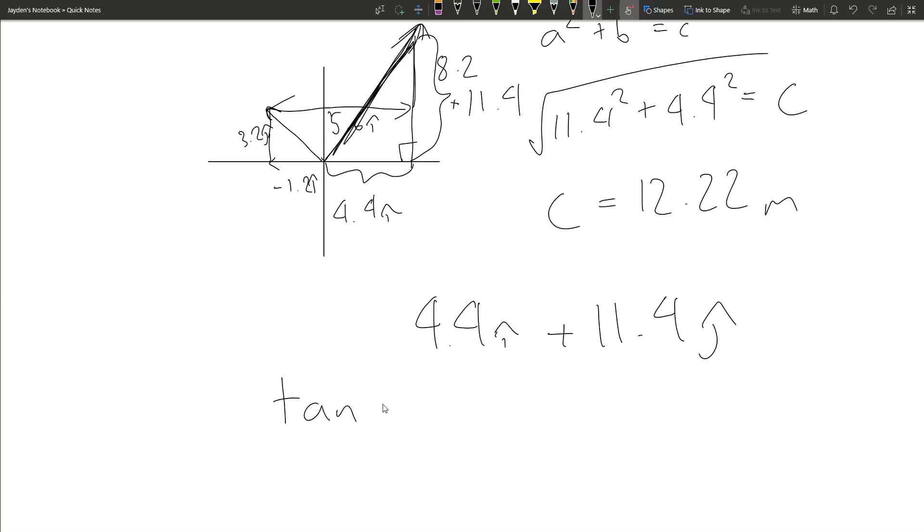A trig function that puts x and y components together to find the slope is tangent. Tangent of theta, which is what we don't know, is equal to y over x, so 11.4 over 4.4. This is in meters.